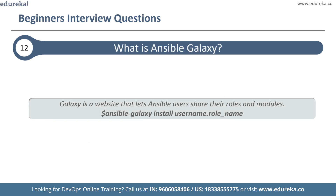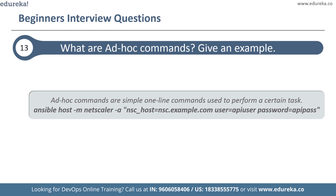The next question is: what is Ansible Galaxy? Galaxy is a website that lets Ansible users share their roles and modules. Ansible roles can be downloaded from Galaxy or directly from a source code management system such as Git. It can also be used to build new roles, remove existing ones, and perform tasks on the Galaxy website. The command to download roles is: ansible-galaxy install username.role_name. The next question is: what are ad hoc commands? Ad hoc commands are simple one-line commands used to perform a certain task — an alternative to writing playbooks. For example, a command using the NetScaler module to disable a server.